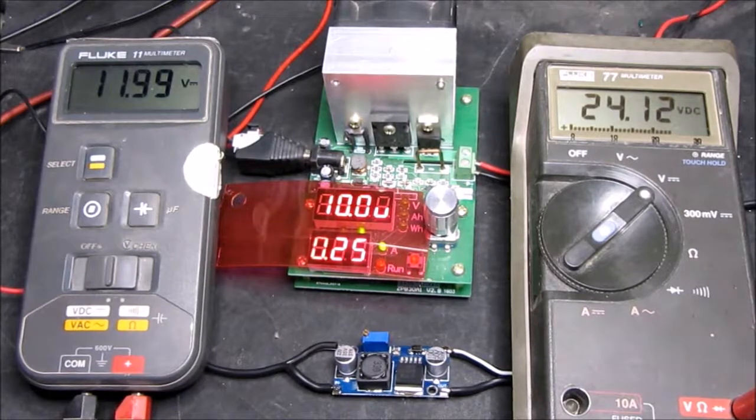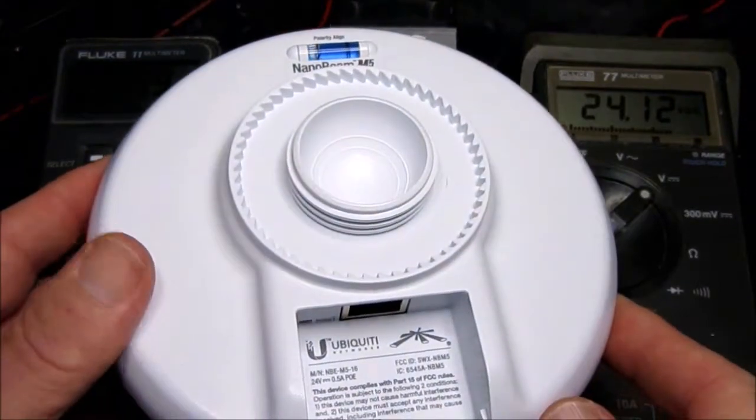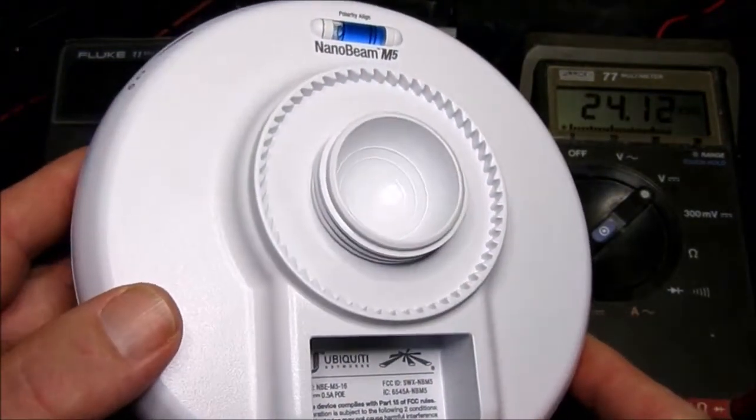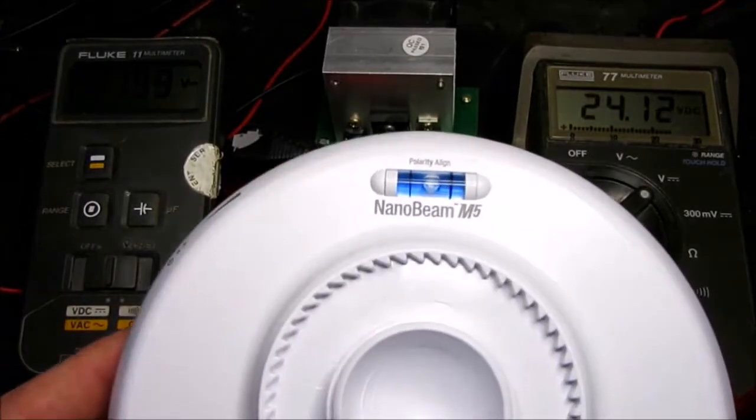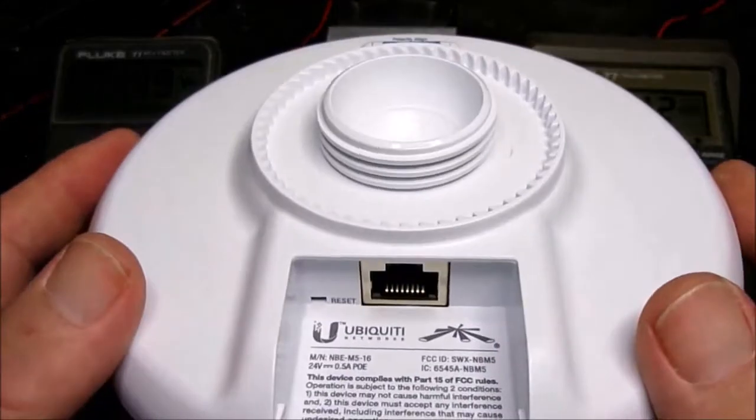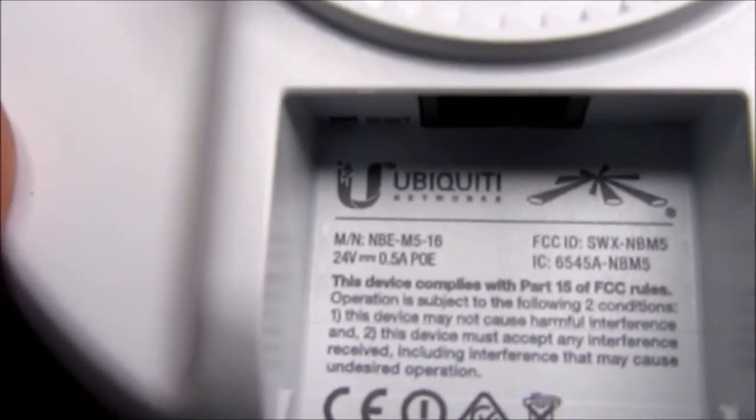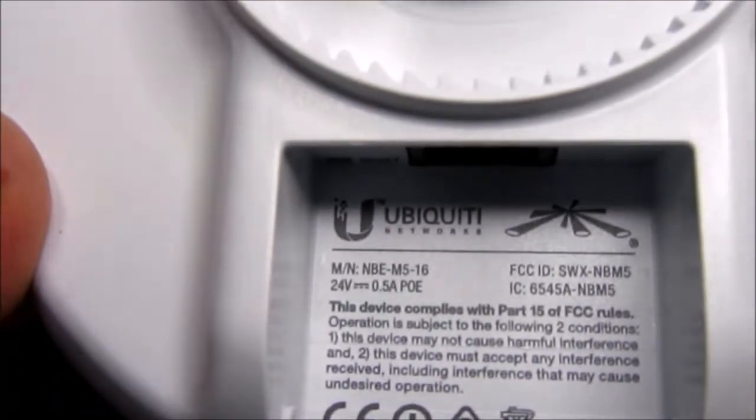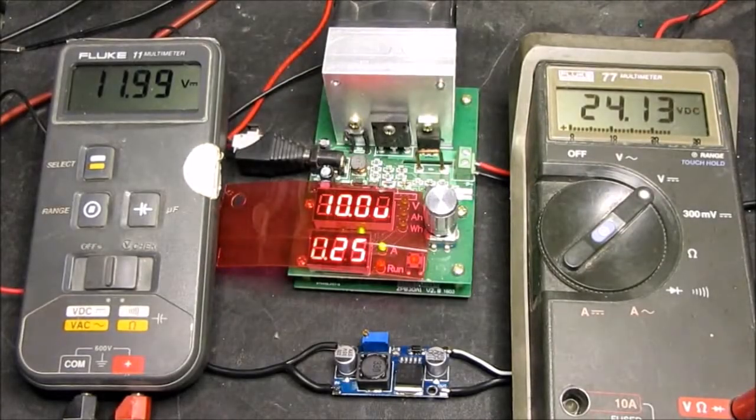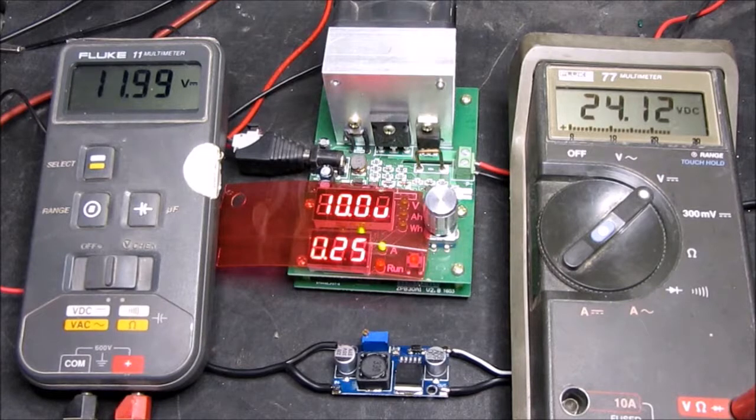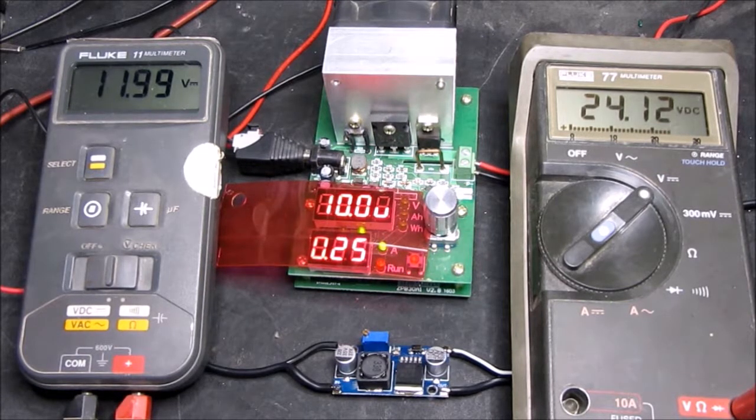I have a need to power a 24 volt Wi-Fi antenna from a 12 volt solar system. So this is the antenna in question, look it says in there, 24 volts 0.5 amp PoE. That figure is kind of nominal. When you look in the specifications for this particular nano beam...